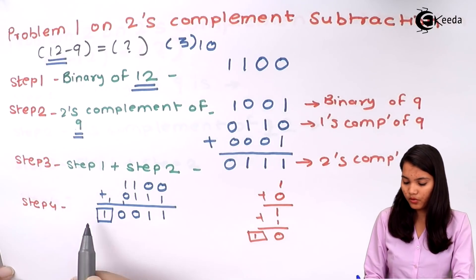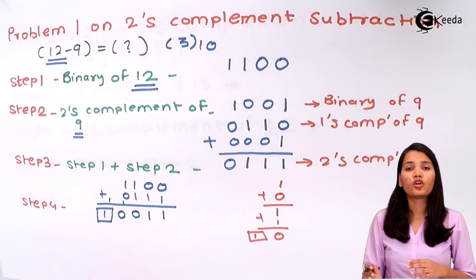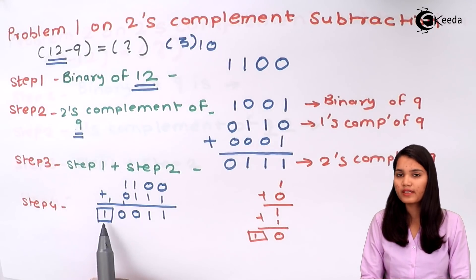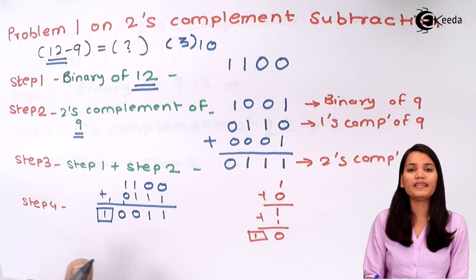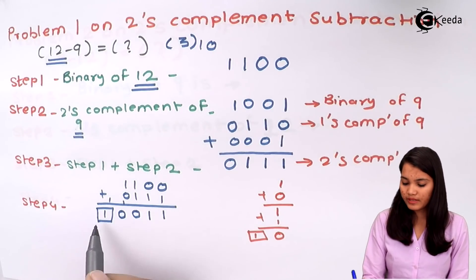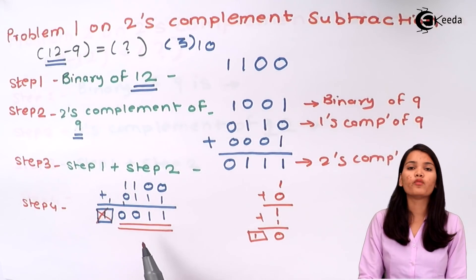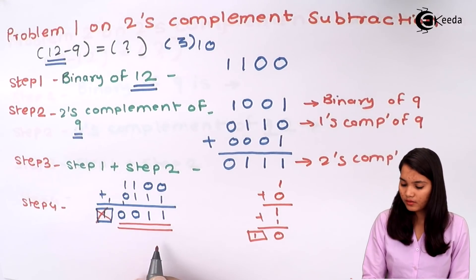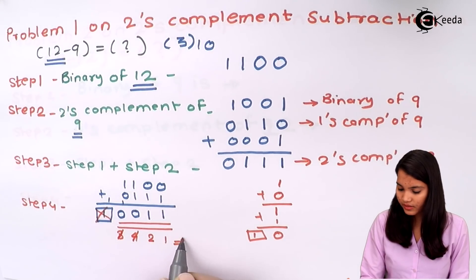Step number 4 is very important. In two's complement method, if a carry is present we simply delete or ignore the carry — unlike one's complement where we perform end-around carry. So we delete this carry and the remaining bits are our final answer. Converting to decimal, the result is 0 0 1 1, which equals 3 in decimal — confirming our answer is correct.